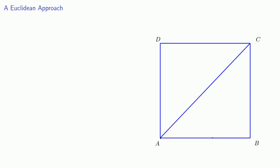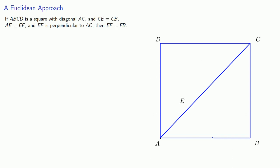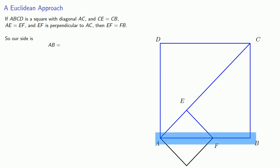Recall when we tried to apply the Euclidean algorithm to find the greatest common measure of the side of a square and its diagonal. We took square ABCD with diagonal AC, marked off CE equal to CB, and drew EF perpendicular, so AE and EF are equal and EF equals FB. The problem was that this reproduced a smaller square with its own side and diagonal. But in mathematics, failing to solve one problem often gives us insight into another.